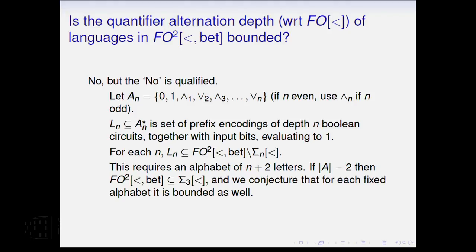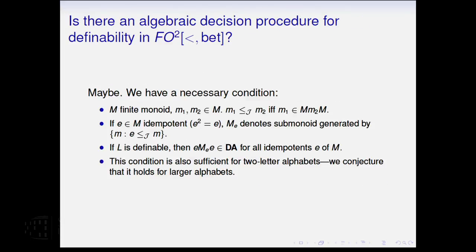If we use the, as the letters of the alphabet, symbols for n and or at different depths, and then take the set of prefix encodings of depth n Boolean circuits that evaluate to true, then what you find, actually, is that this language has alternation depth larger than n. It's not in sigma n. On the other hand, this requires the alphabet to grow. And we believe that if you fix the alphabet size, that the quantifier alternation depth in this sense is bounded, but we've only been able to prove that for a two-letter alphabet. That's really kind of our open question. And finally, yes, we do have one of these, we have an algebraic decision procedure, but, again, it's not as tight a result as we'd like. It is a necessary condition that we can compute. We know this condition is sufficient for two-letter alphabets, and we're still working on the question about for larger alphabets.